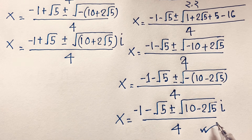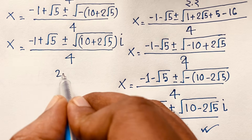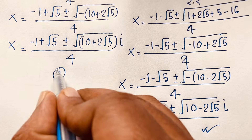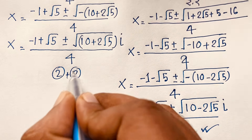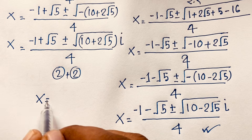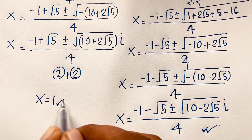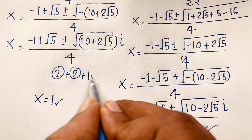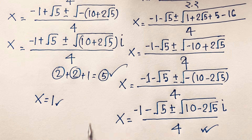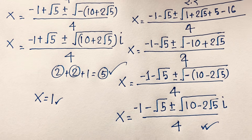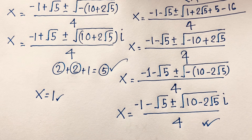So we find here two solutions from this case, and two solutions from the previous case, plus x equals 1 as our first real solution. This gives us all five solutions total, as expected since the exponent is x to the power 5. Thank you all! If you enjoy this math problem, please subscribe to my channel for other interesting videos. Goodbye, take care everyone!